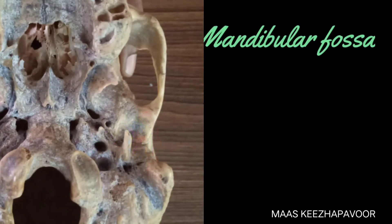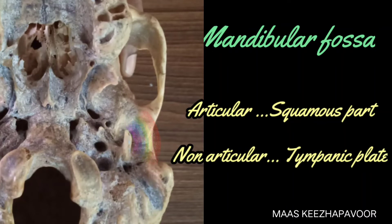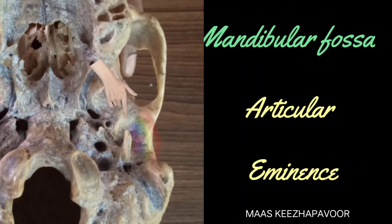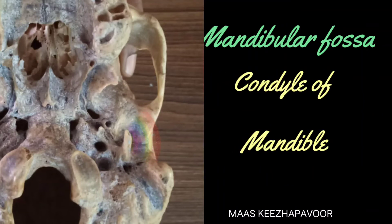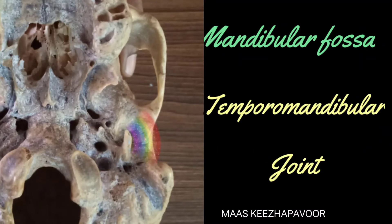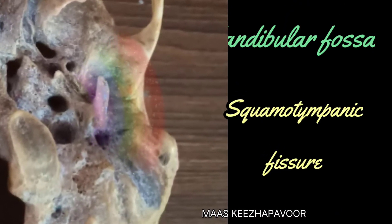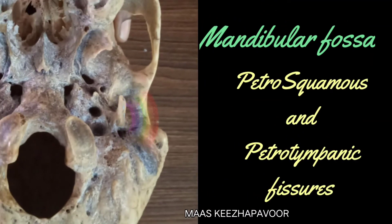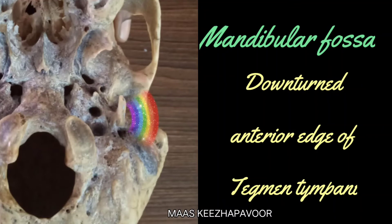The mandibular fossa has articular and non-articular parts. The articular part is seen in the squamous part of the temporal bone, and the non-articular part is formed by the tympanic plate. The articular part is anteriorly limited by the articular eminence and articulates with the condyle of the mandible to form the temporomandibular joint. The non-articular part is related to the parotid gland.